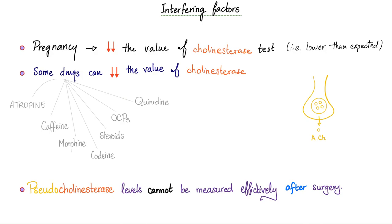Interfering factors with the level of the cholinesterase in the plasma. Pregnancy can give you a value that's lower than normal. Some drugs can give you a value that's lower than normal. What are these drugs? Atropine, caffeine, morphine, codeine, steroids, oral contraceptives, and quinidine. Be careful! Pseudocholinesterase levels cannot be measured effectively after surgery. Why? Because all of these drugs, you give lots of drugs during surgery and before surgery. These will interfere with the result of the test, making the test useless. So if you want to measure the level of pseudocholinesterase, you better do it before surgery, doofus.